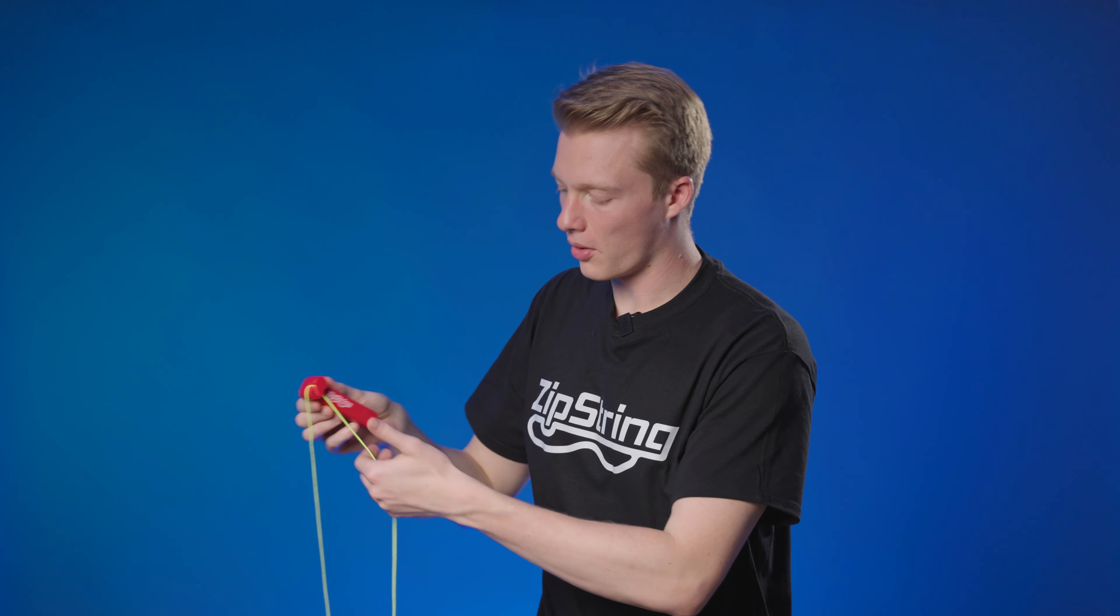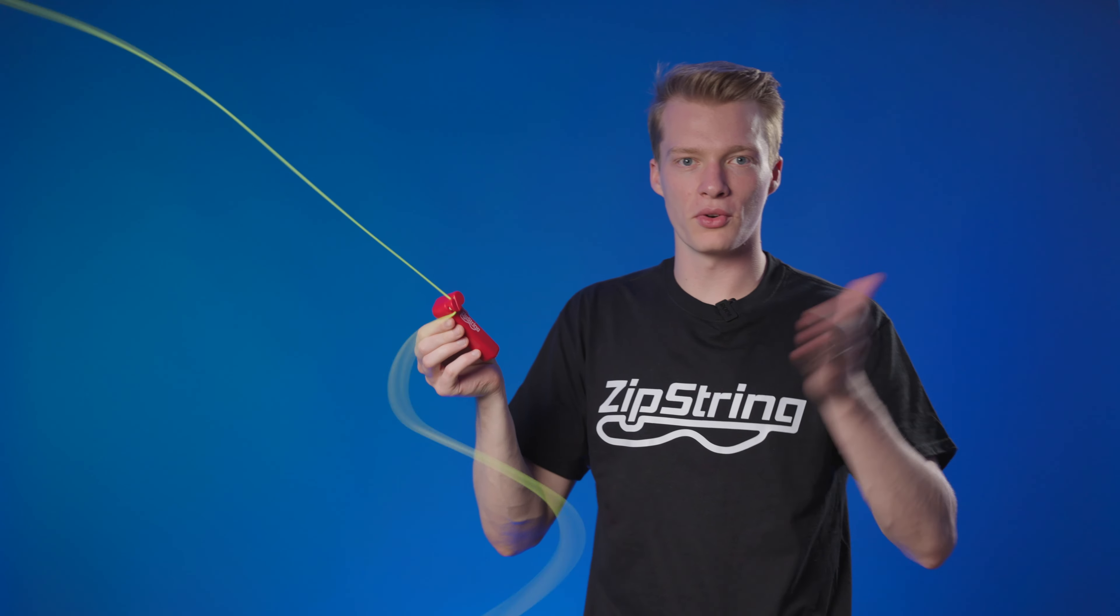But sometimes you want to start it up when there's a twist or a tangle in it. So all you do is take your other hand and pull on the back string, start up the zip string, and then release.